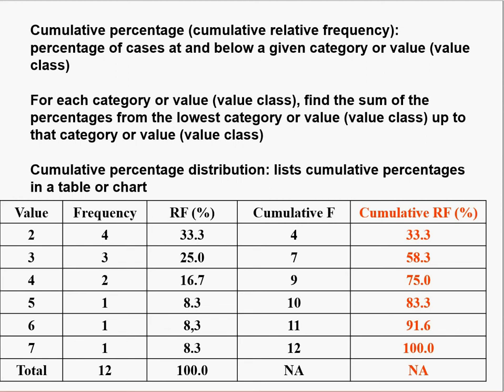We can also calculate the cumulative percentage by dividing the cumulative frequency by the total frequency. For example, dividing cumulative frequency 4 by total 12 gives 33.3%; dividing 7 by 12 gives 58.3%; dividing 9 by 12 gives 75%. So 75% means that values at or below 4 account for 75% of all cases in the data set.